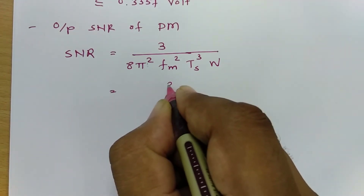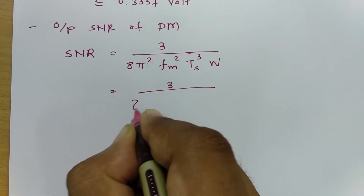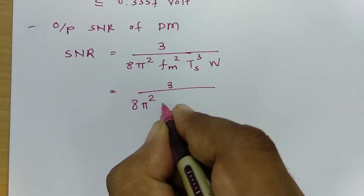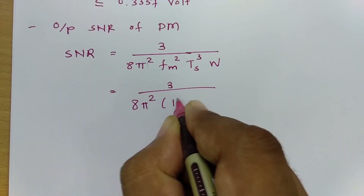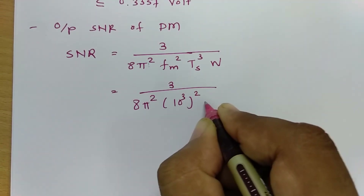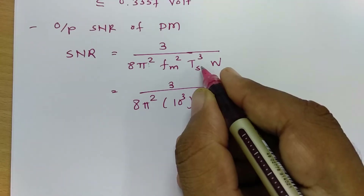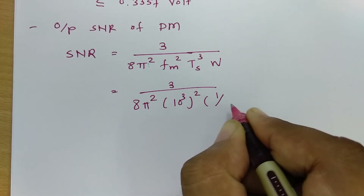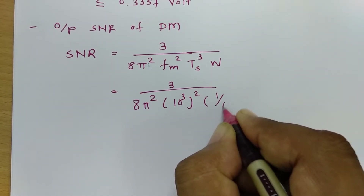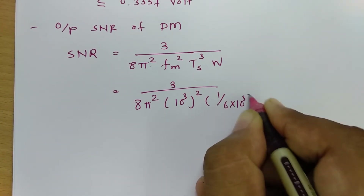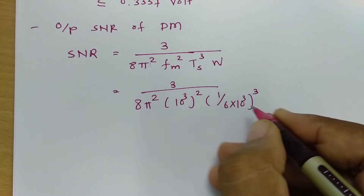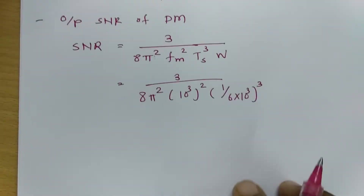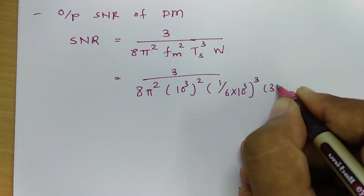Now placing all data into the SNR formula: SNR = 3 divided by 8π² multiplied by fm² (1 kilohertz, so 10³ squared), multiplied by Ts³ which is (1/fs)³ = (1/(6 × 10³))³, multiplied by W which is 3 kilohertz (3 × 10³).